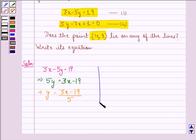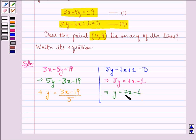Equation of the other line is 3y minus 7x plus 1 is equal to 0. This implies 3y is equal to 7x minus 1 and this implies that y is equal to 7x minus 1 divided by 3.